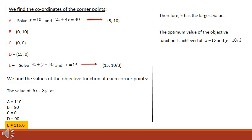The alternative method is to determine the coordinates of all the corner points. Point A is the intersection of constraints 2 and 4, giving coordinates (5, 10). Point B has coordinates (0, 10). C is the origin at (0, 0). D is at (15, 0). Point E is the intersection of constraints 1 and 3, giving coordinates (15, 10/3).